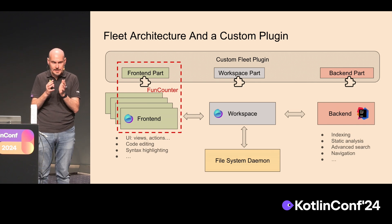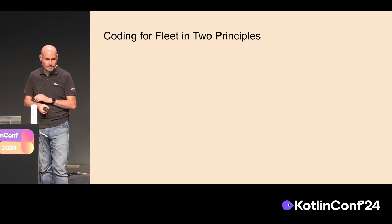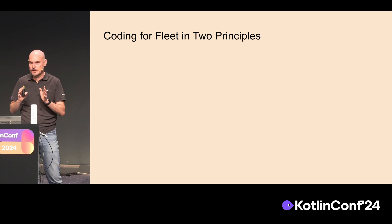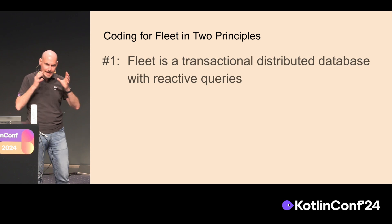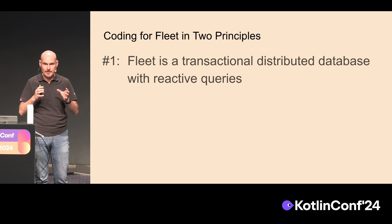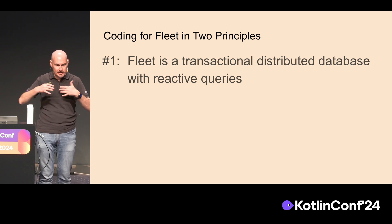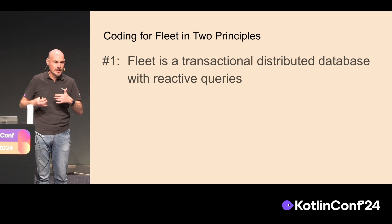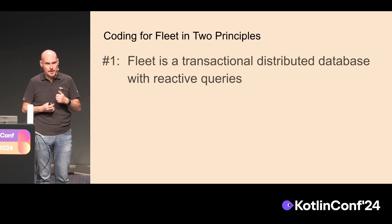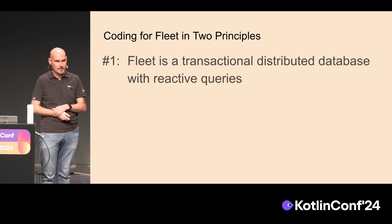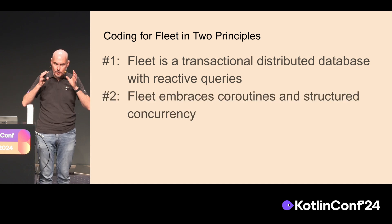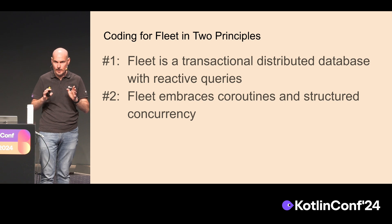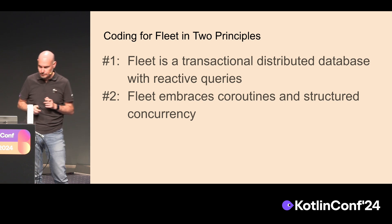Before writing code for Fleet, remember two basic principles. Principle one: Fleet is a distributed database with reactive queries. Every change you make goes in a transaction, and you have reactive queries so you can query for something and receive notifications about changes in that database. Principle two: Fleet embraces Kotlin coroutines, structured concurrency, and scoped concurrency — everything you like in Kotlin. You need to be proficient in that to develop plugins for Fleet.